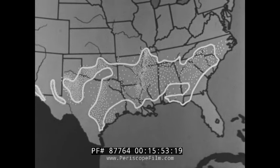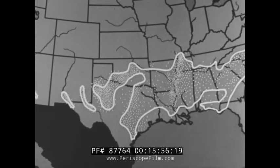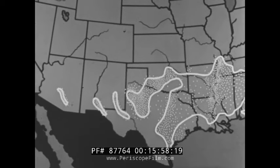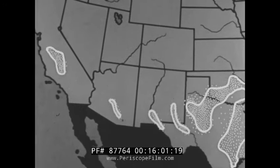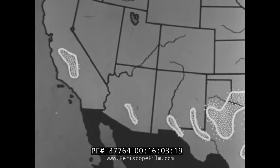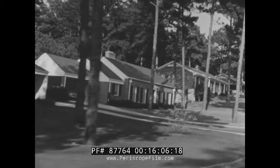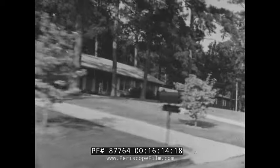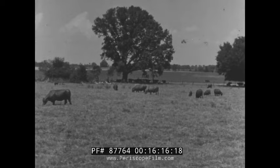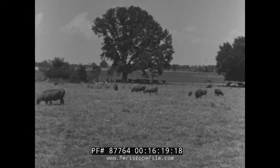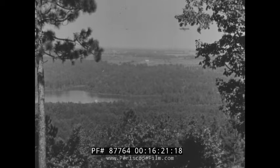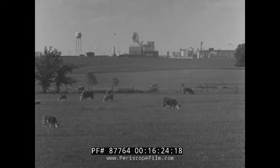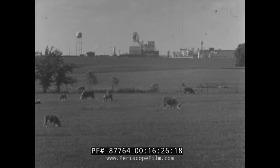Cotton as an irrigated crop has increased in the southwestern states. California now ranks second to Texas as a cotton producing state. People in the cotton belt live better today now that they have begun to use more wisely their resources of soil, long growing season, abundant water, forests, and minerals. Changing agriculture and growing industry — that is the cotton belt today.